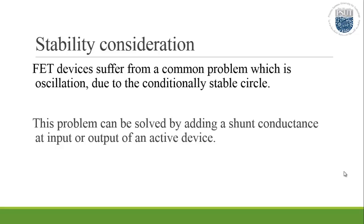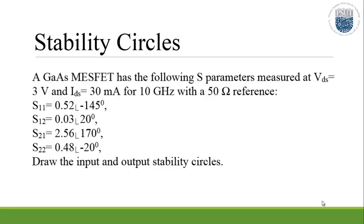Now, we will solve the question. The question will be solved by using the Kitab program. A gallium arsenide MESFET has the following S-parameters, measured at VDS equals 3V and IDS equals 30 mA for 10 GHz with a 50 Ohm reference.